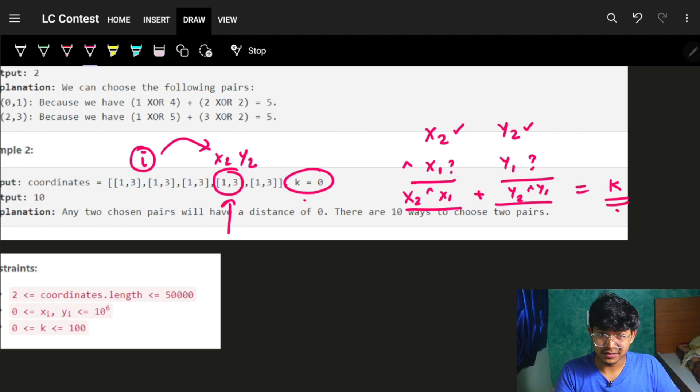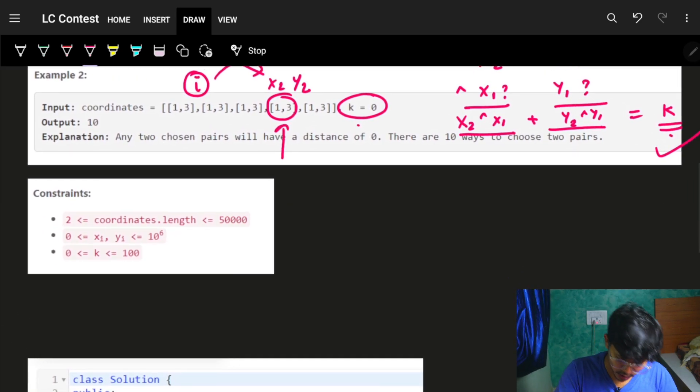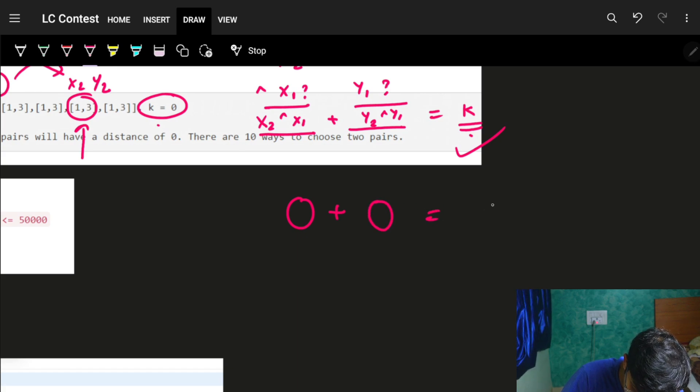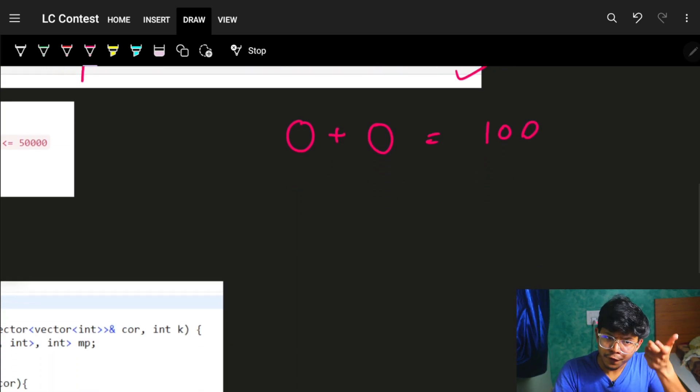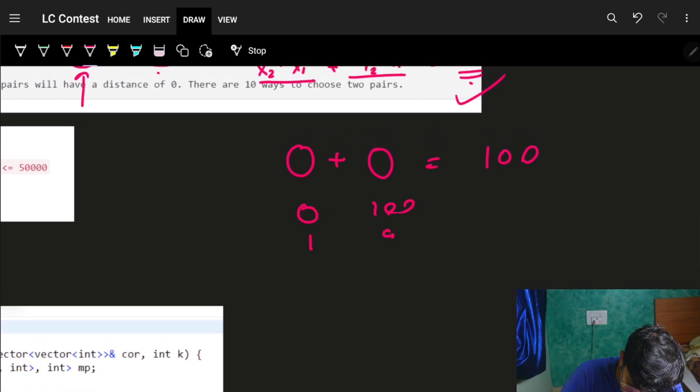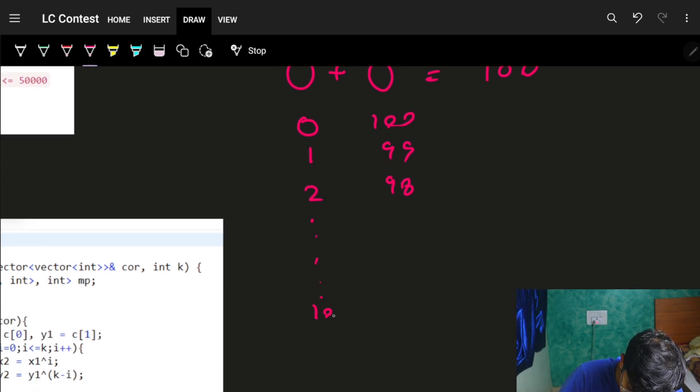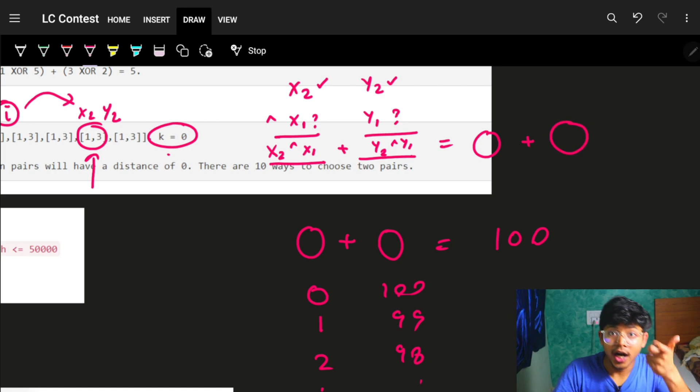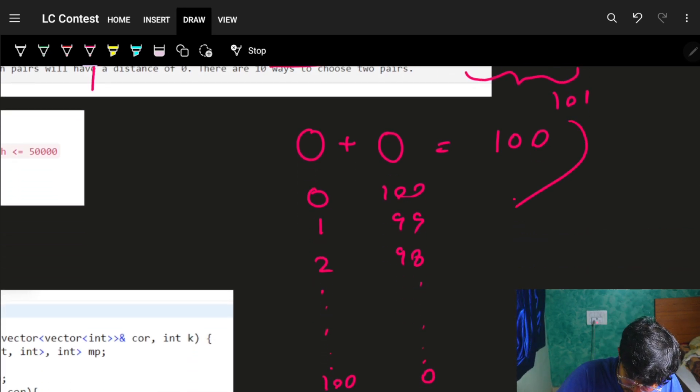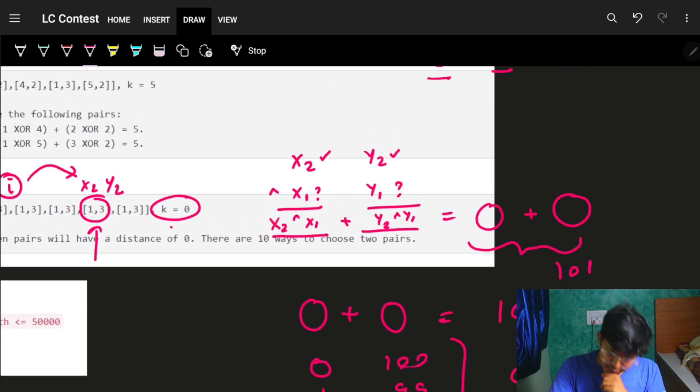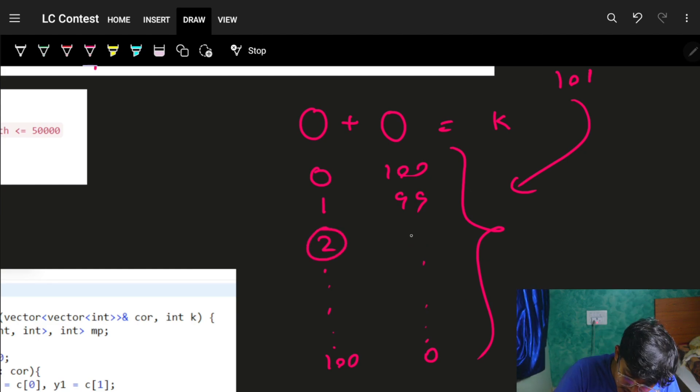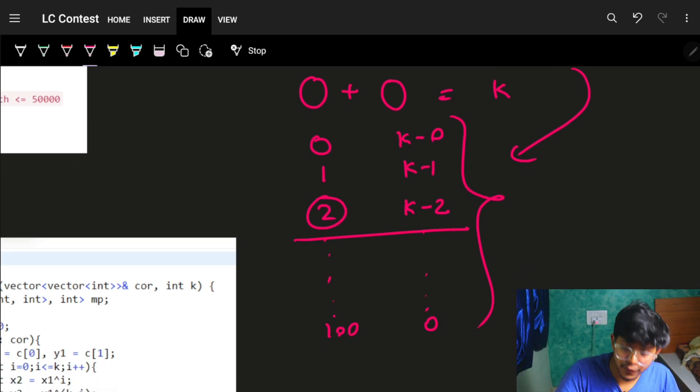Before you start thinking about trying all possibilities of x1, y1, notice how small k is. If the sum of two numbers equals k, and k is at most 100, then I can break this down to combinations like 0+100, 1+99, 2+98, up to 100+0. The maximum is 101 combinations. So if I have a value k=2, I'll try for 2 and k-2=0, or 1 and k-1=1, and so on.